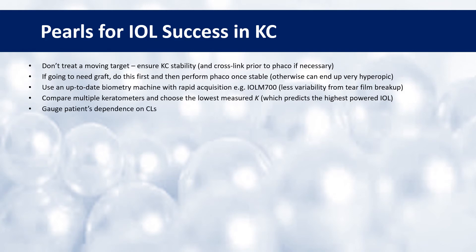Think about how dependent the patient is likely to be on contact lenses afterwards, because if they are going to need contact lenses, it does affect your decision making when it comes to IOL choice. To try and minimise your surgically induced astigmatism, if you are using a toric, then a scleral tunnel or limbal incision is advisable.